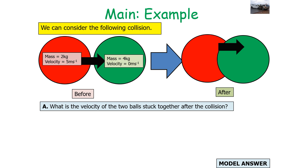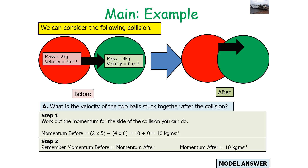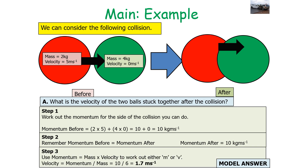Here is an example of two objects hitting each other and sticking together after the collision. What is the velocity of the two balls stuck together? First, work out the momentum before: 2 × 5 + 4 × 0 = 10 kg·m/s. The total momentum after must also equal 10 kg·m/s. Using momentum = mass × velocity, velocity = momentum ÷ mass = 10 ÷ 6 = 1.7 m/s.